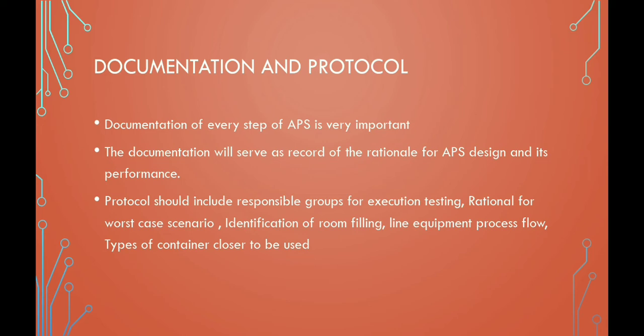The batch manufacturing record shall be prepared in accordance with requirements. An additional section detailing the step-by-step performance of each intervention should be part of this batch record. All interventions performed — both planned and unplanned — with details such as time, operations, operators involved, duration, identity of the tray filled, any line stoppages, and sample units removed should be clearly documented.